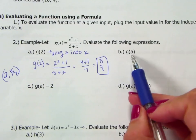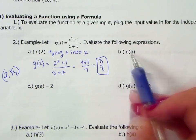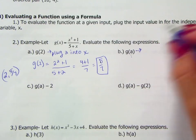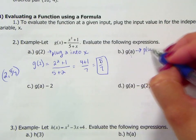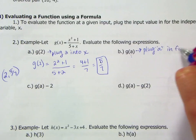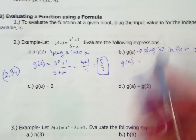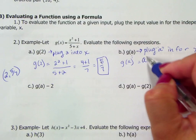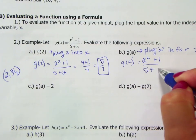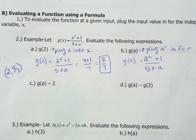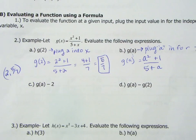If you look at the next example, now we are going a little bit more general here. Now we are finding g(a). So instead of plugging in a numeric digit, this means we are plugging a in for x. So same thing that we did in the last one. So instead of x squared, we will have a squared plus 1 over 5 minus a. Now there is nothing there that we can simplify like we could on the first example. So we would just say that g(a) equals a squared plus 1 over 5 plus a.